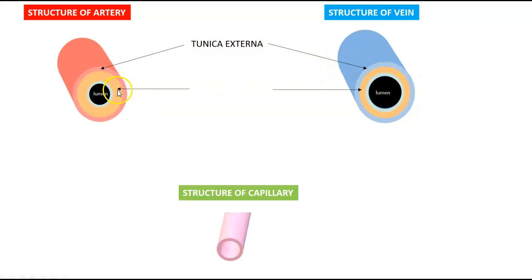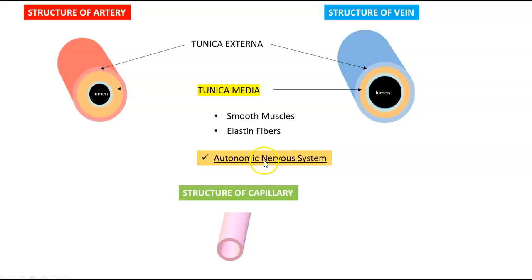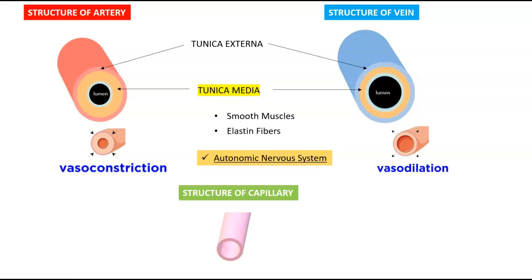Now let's go to the middle layer. The middle layer is made up of a layer called the tunica media, composed of smooth muscles and elastin fibers. This is under direct supervision of the autonomic nervous system, which helps the vessels vasoconstrict to bring blood pressure up and vasodilate to bring blood pressure down. Vasodilation can happen as a result of shock or allergic reactions, which is very serious because blood pressure can drop very quickly, causing severe syncope, shortness of breath, and even passing out.